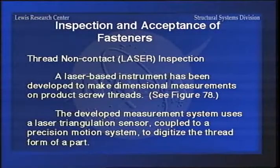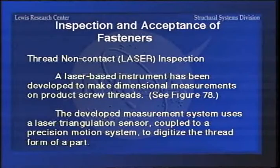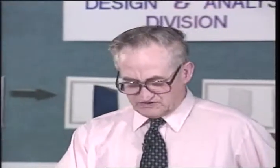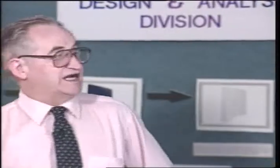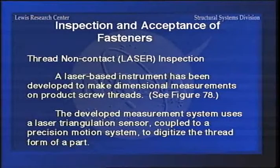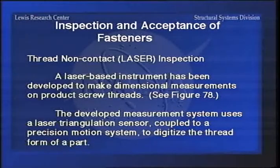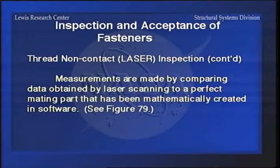Here is another method of thread inspection: a laser inspection method. Most manufacturing facilities would not have this at all because it is a setup with a full computer printout capability, and it costs about a hundred thousand dollars. It is a very accurate method of checking threads. It uses laser triangulation sensors and a motion sensor to digitize the thread form. It's a non-contact method using a laser beam, and measurements are made by comparing data obtained by laser scanning the thread to a perfect mating part that has been mathematically created in software.